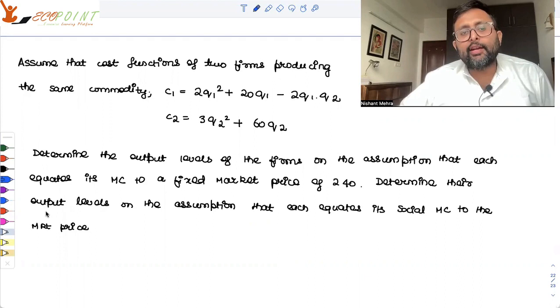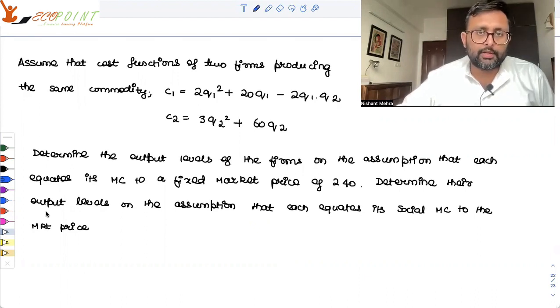This is easy. Determine their output levels on the assumption that each equates its social marginal cost to the market price. Pause the video. Do both the parts.